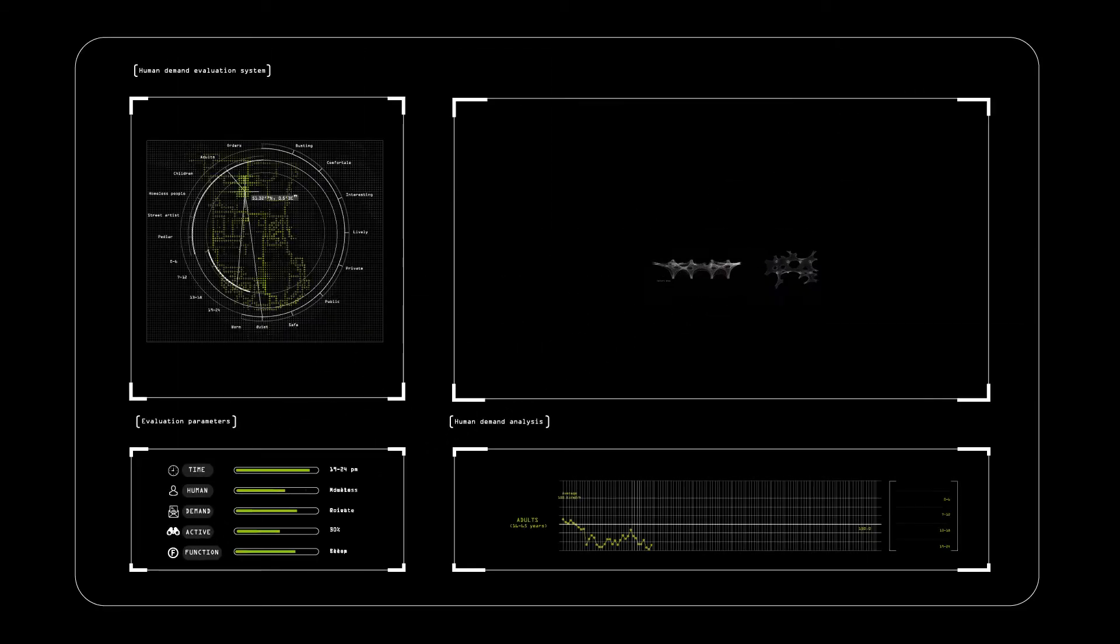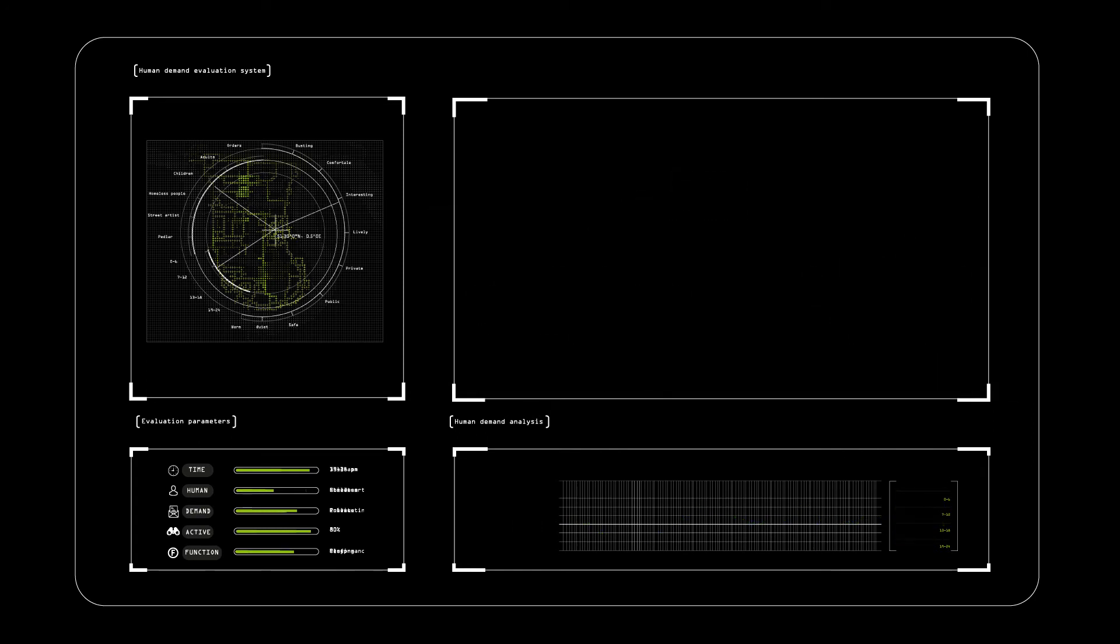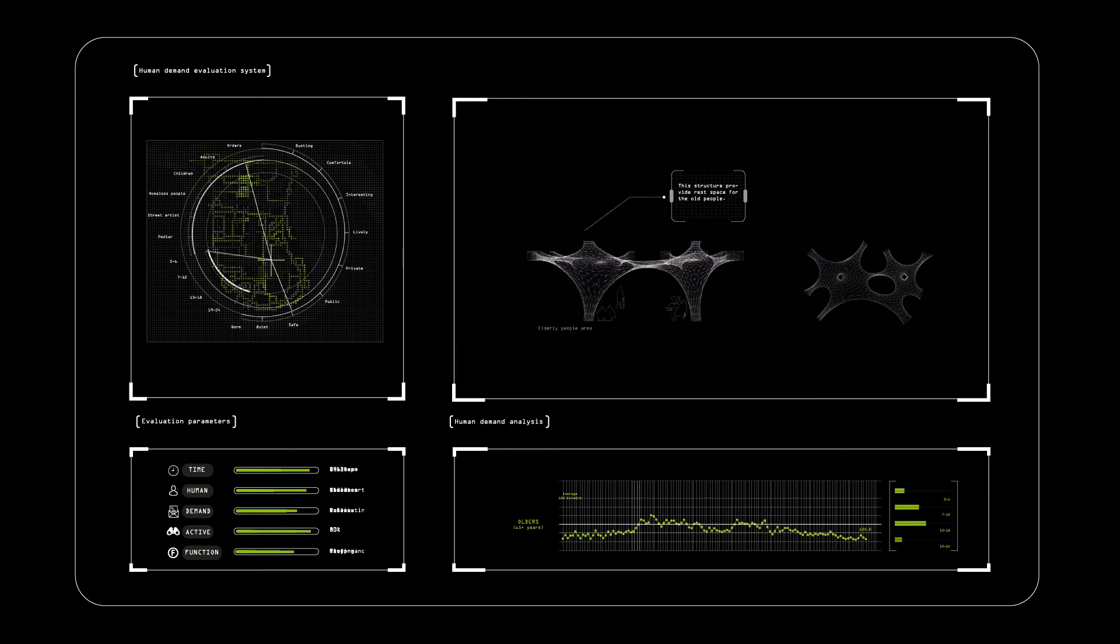And then, we developed the structure form according to the human spatial demands. We grouped the people into the old, adults, children, and also have three special groups: homeless people, street artists, and peddlers. This interface helps people to choose what prototype and what place to build.